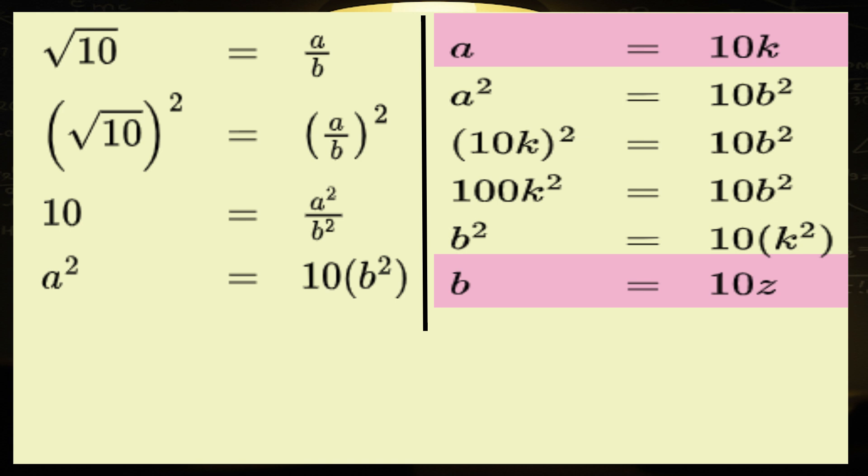Now, this is where the rubber meets the road. Since our assumption led us directly into contradiction town, we can officially say, well folks, our assumption must be wrong. And that, my friends, is how to prove by assuming the contrary and one of the ways to prove that the square root of 10 is irrational. Case closed.